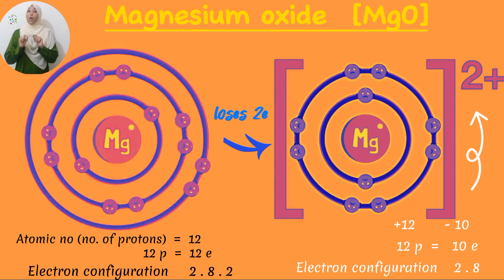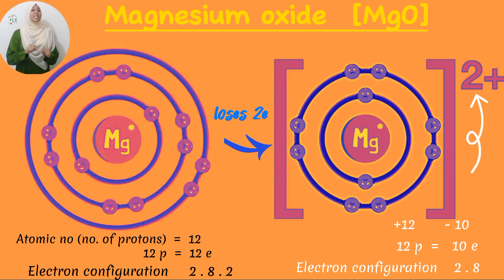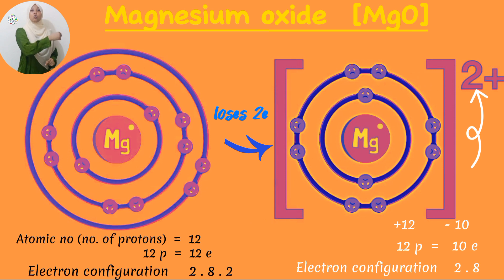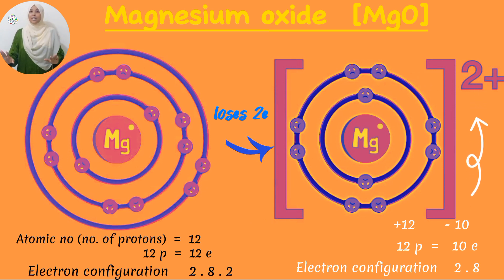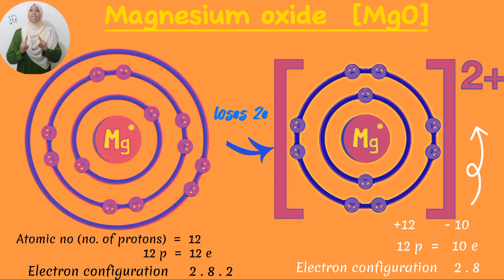And that is the reason why when you write the magnesium ion, you write it as Mg²⁺. So whenever you see the 2+, know automatically that this is an ion that has lost 2 electrons.